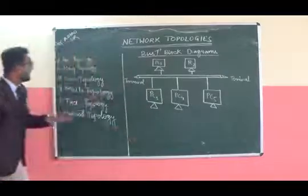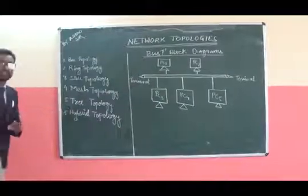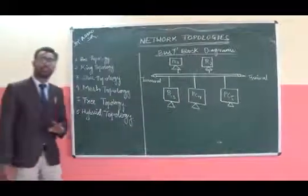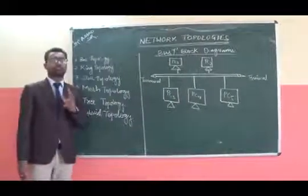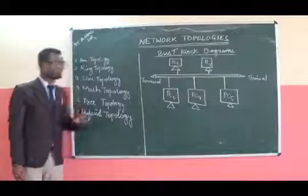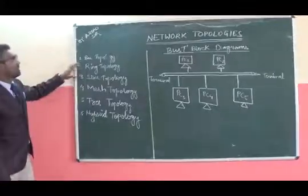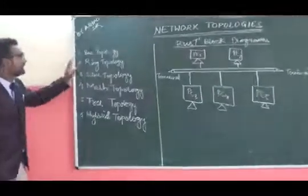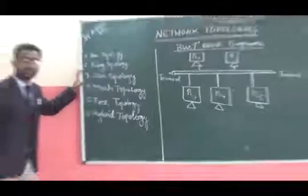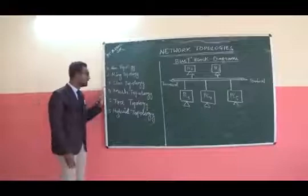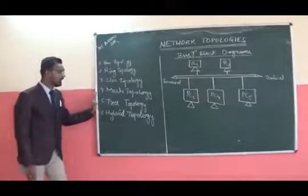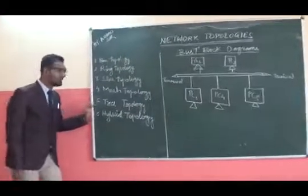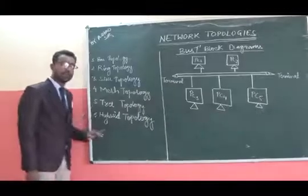There are six types of different network topologies: bus topology, ring topology, star topology, mesh, tree, and hybrid. Hybrid is the combination of any two or three topologies.